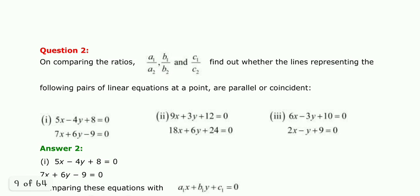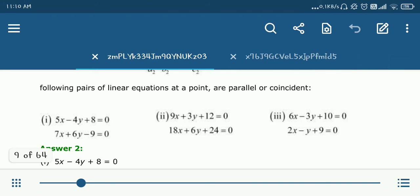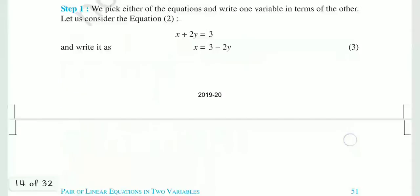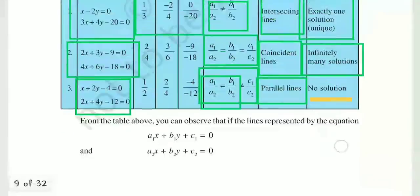Question number 2: comparing ratios A1/A2, B1/B2 and C1/C2. Find out whether the lines representing the following pair of linear equations intersect at a point, are parallel, or are coincident. We need to find this here. Let's first look at the table so it becomes clear what we need to do.